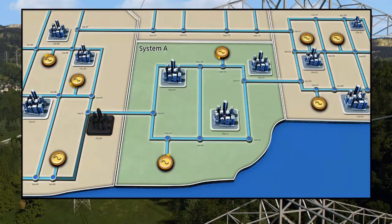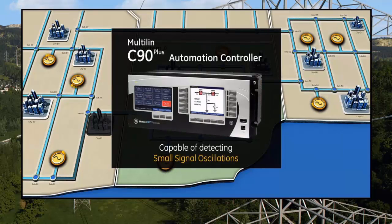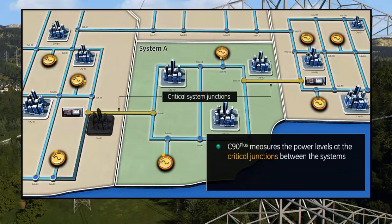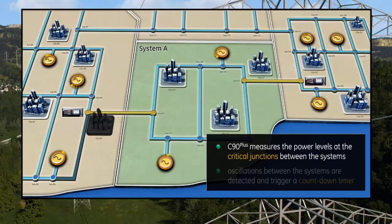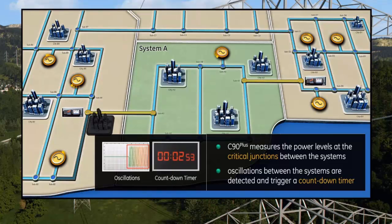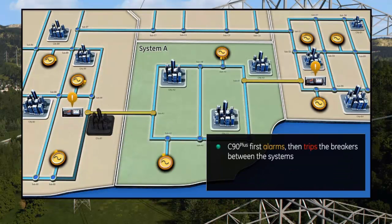A multi-lin C90 Plus automation controller, capable of detecting small signal oscillations, monitors the power levels of the critical junctions between System A and the rest of the interconnected systems. The C90 detects the inter-area oscillations and triggers a countdown timer, allowing the system time to correct itself.